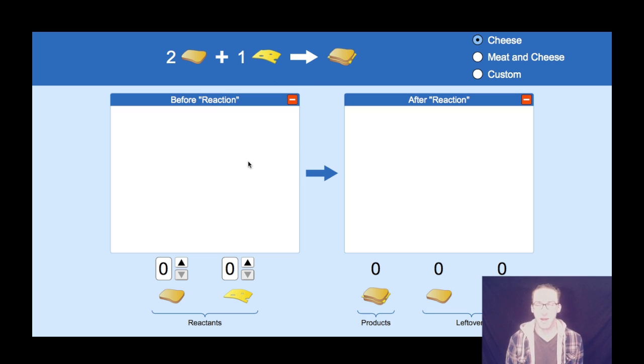But let's imagine now that I'm provided with a certain amount of each reactant. Let's say four slices of bread and one slice of cheese. As you think about these ideas of excess and limiting reactants, always go back to your balanced chemical equation, aka your recipe. To make one sandwich, we need two slices of bread and one piece of cheese.